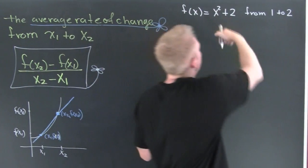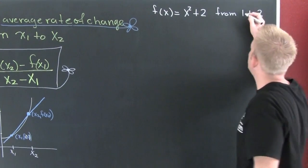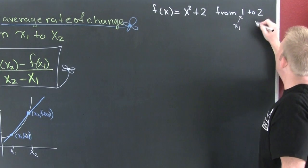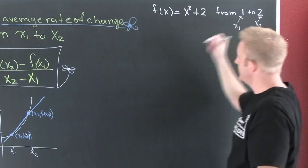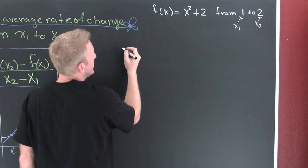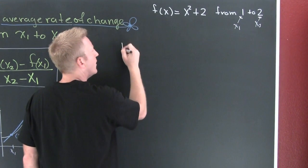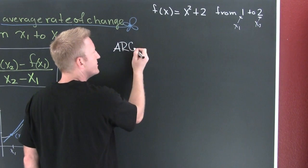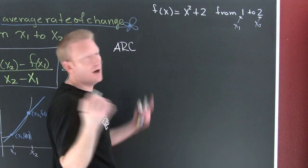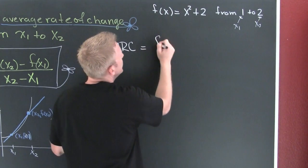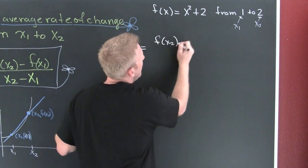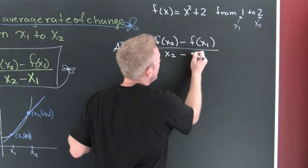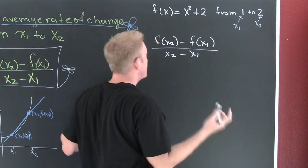Let's get an example up here. So then I'm gonna let this be my x1, this be my x2. So what am I looking for? I'm looking for my average rate of change, ARC. This is f of x2 minus f of x1 divided by x2 minus x1.